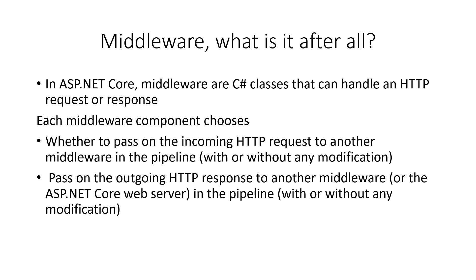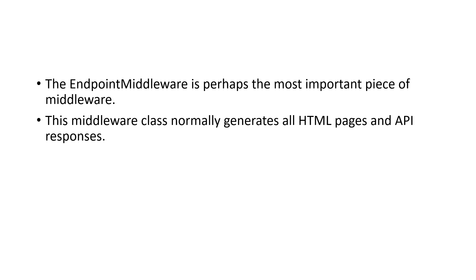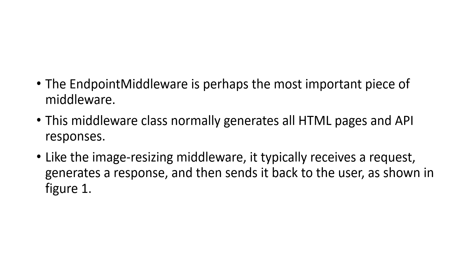We can do a lot with middleware. The logging middleware can receive the request, log its time of receipt, and pass it on to the next middleware. Another middleware can modify an image, resize it, and return the image file to the user without passing it on. The endpoint middleware is perhaps the most important piece — it normally generates all HTML pages and API responses. Like the image resizing middleware, it typically receives a request, generates a response, and sends it back to the user, as shown in figure one.